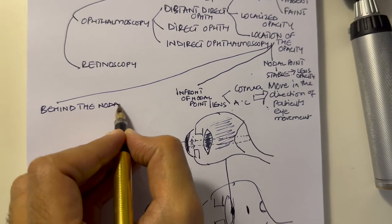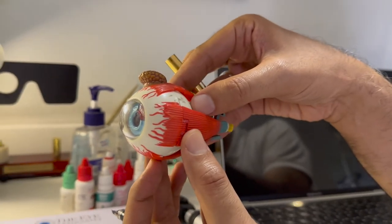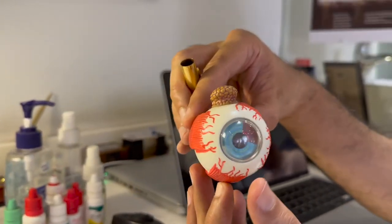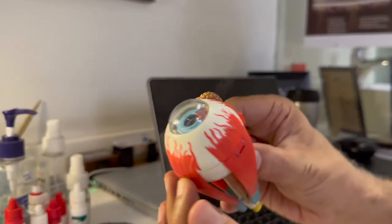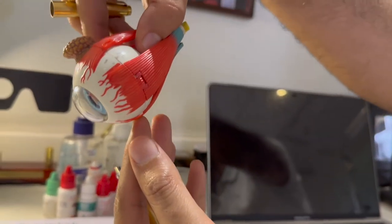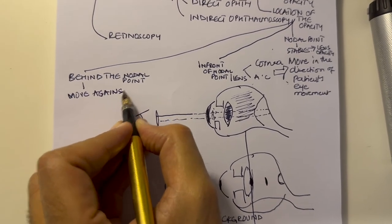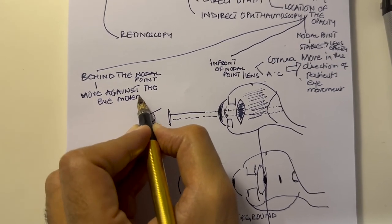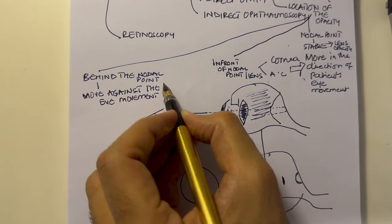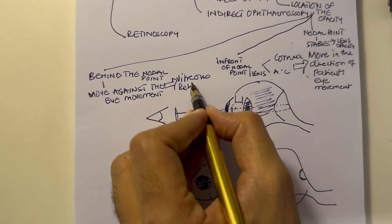Any opacity behind the nodal point moves against the eye movement: if you move the eye to the left the opacity moves to the right, right moves the opacity left, up moves the opacity down, and down moves the opacity up. Anything behind the nodal point moving against eye movement tells you the opacity is either in the vitreous or at the retina.